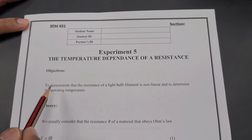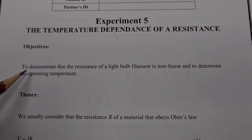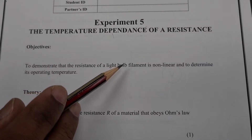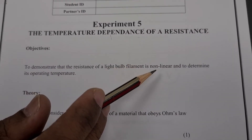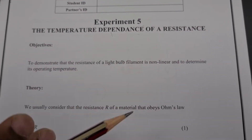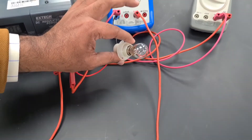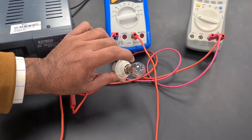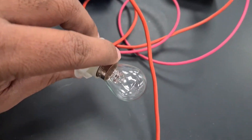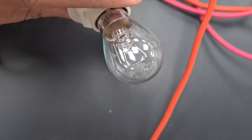What is our objective of this experiment? To demonstrate that the resistance of a light bulb filament is non-linear. Today, we are going to use one bulb. You can just have a look here — we are going to use this bulb. And inside the bulb, you can see the filament. The thin filament is made up of tungsten material.